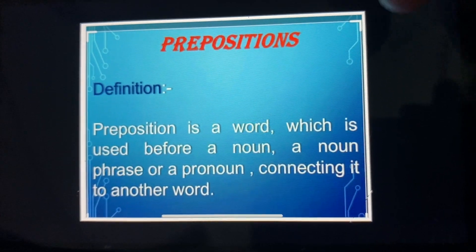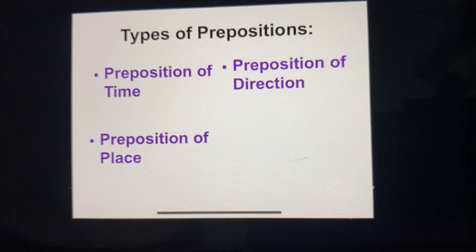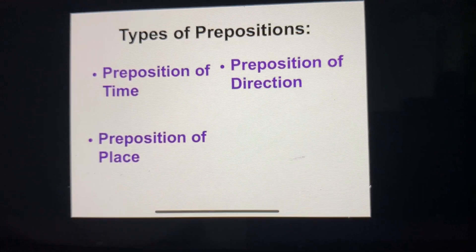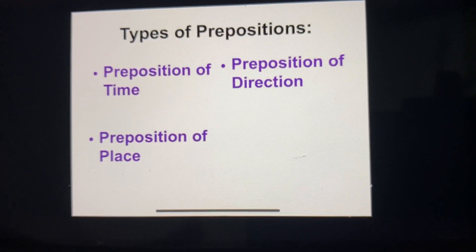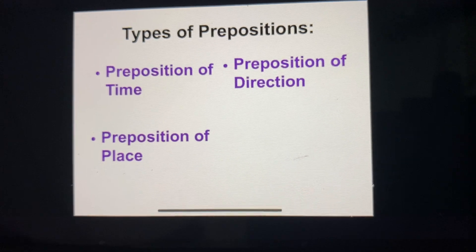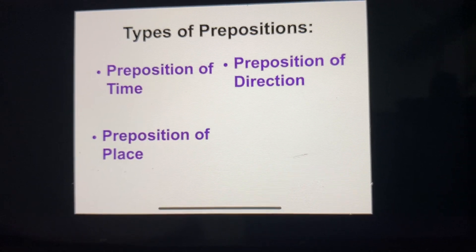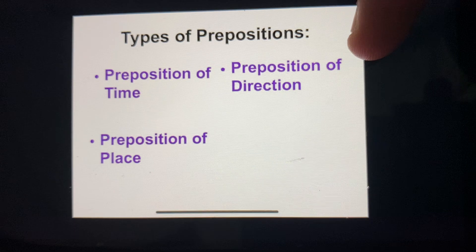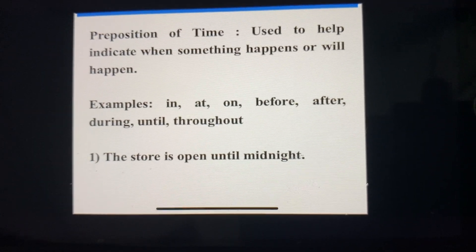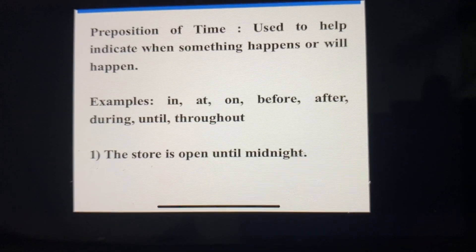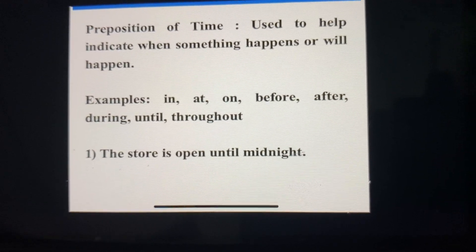There are mainly three types of prepositions: preposition of time, preposition of place, and preposition of direction. The first one, preposition of time, is used to help indicate when something happens or will happen.